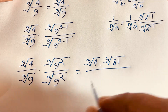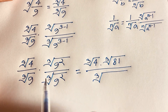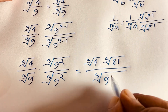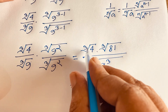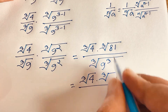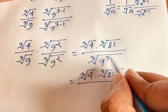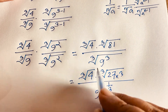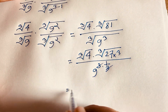Since 9 to the power 1 times 9 to the power 2 equals 9 to the power 3, the denominator becomes 9 to the power 3. Taking the cube root of 9 cubed gives exactly 9, which cancels, leaving 1 over 9.